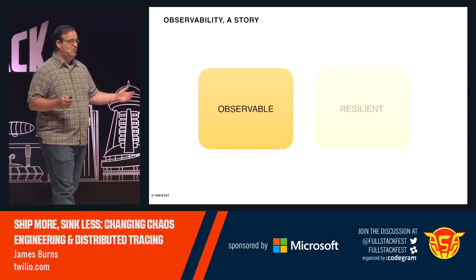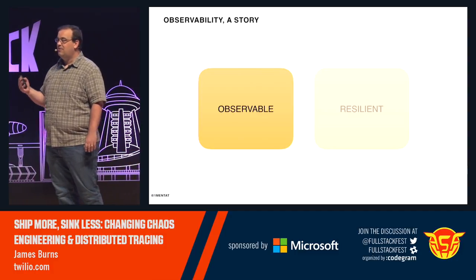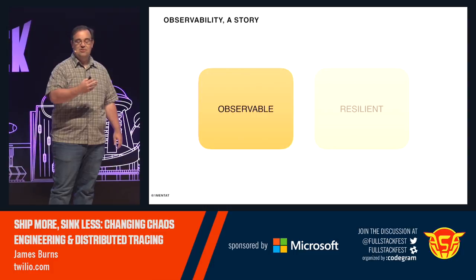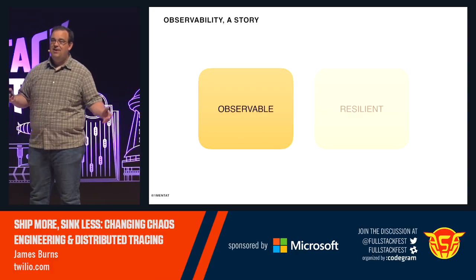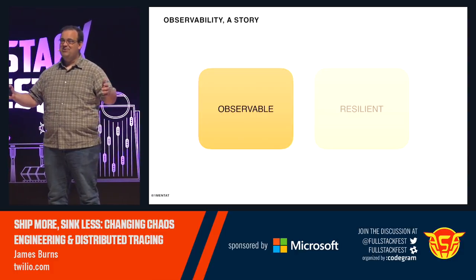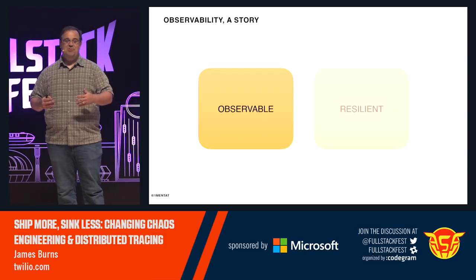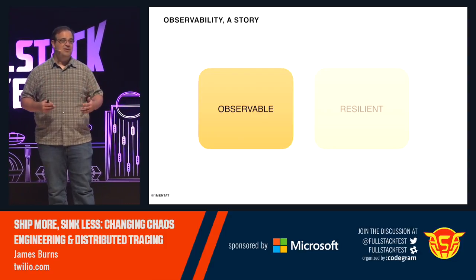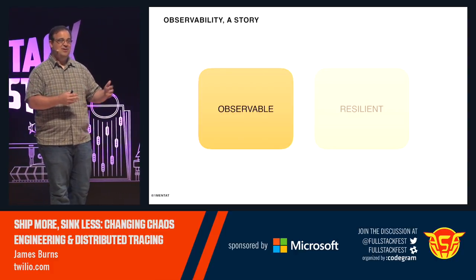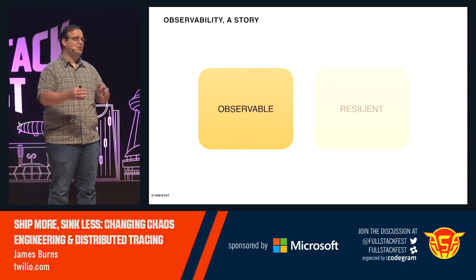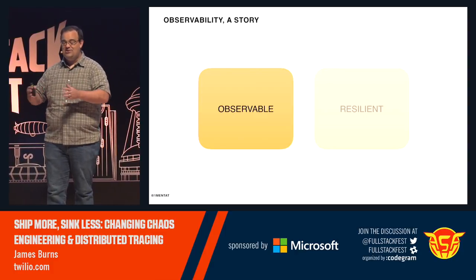The usual ways to make a system observable are metrics, logs, and exception reporting. One system I work on is a low-latency system that takes data from one place and moves it to another with simple transformations. We made it observable by identifying the metrics we needed to understand whether it was providing the expected latency. Since it was sharded, we tracked per-shard whether all shards were performing correctly and whether ingest latency was consistent.